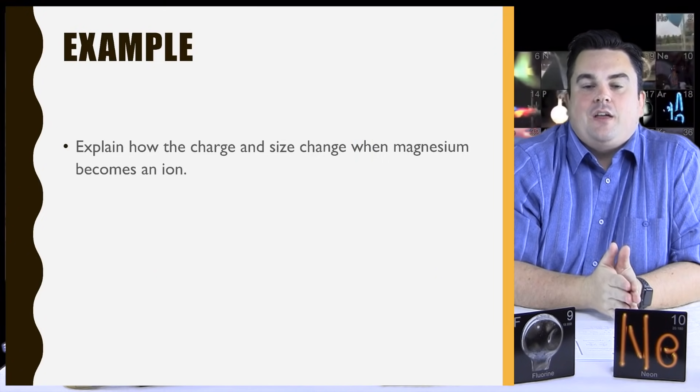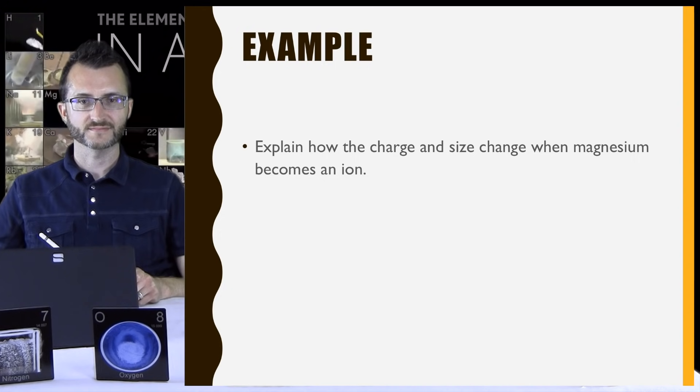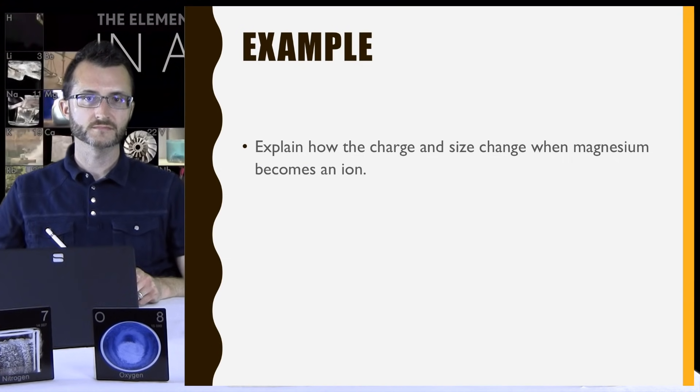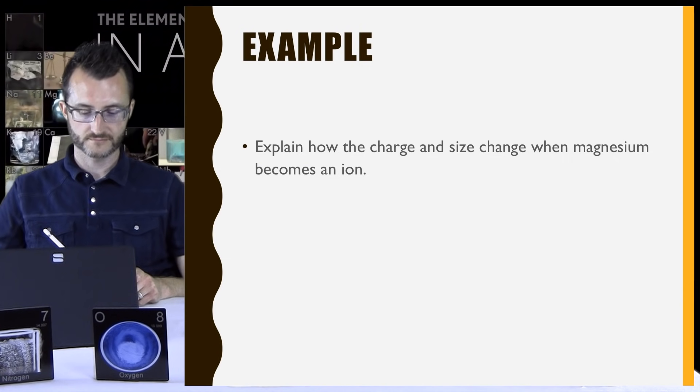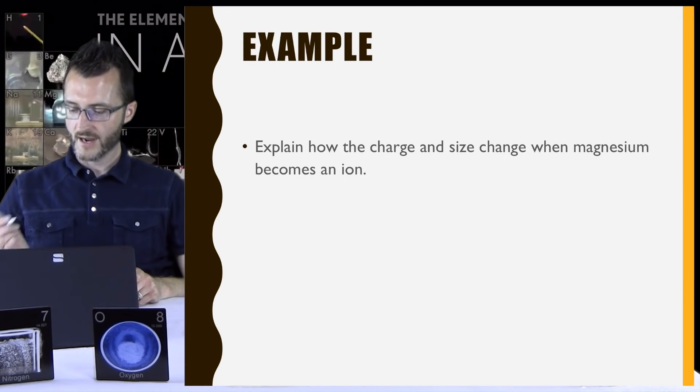All right, we're going to do an example here. Shoo, are you ready? I'm ready. All right. Explain how the charge and size change when magnesium becomes an ion. All right. So when atoms become ions, it's due to their electrons. So we're going to look up magnesium and its electron configuration on our periodic table.